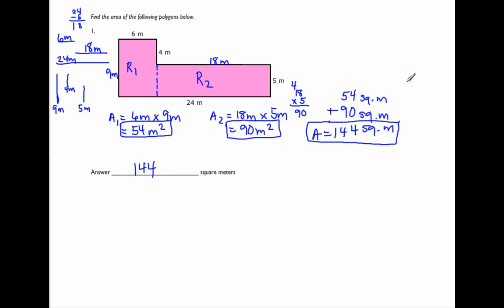That's how you find the area of irregular polygons. To review the steps: Step 1 — use your parallel lines to figure out the missing lengths. Step 2 — break up your figure into rectangles. Step 3 — find the areas of the individual rectangles. Step 4 — add up the areas of each shape. Hope this helps.